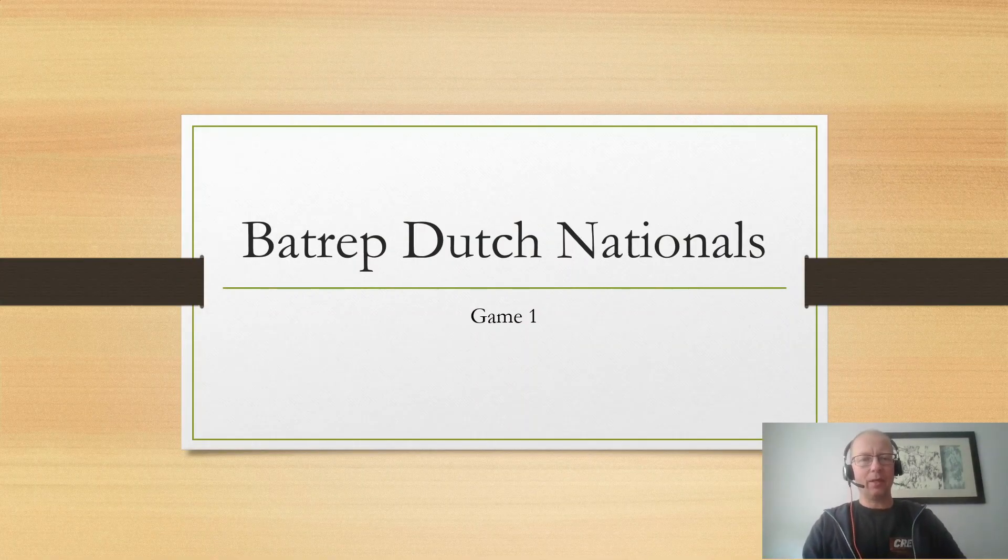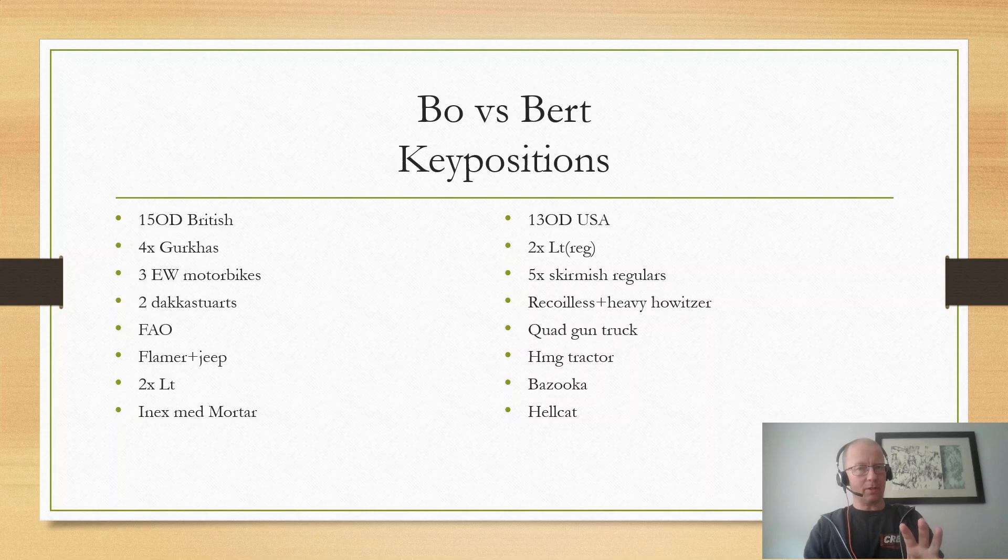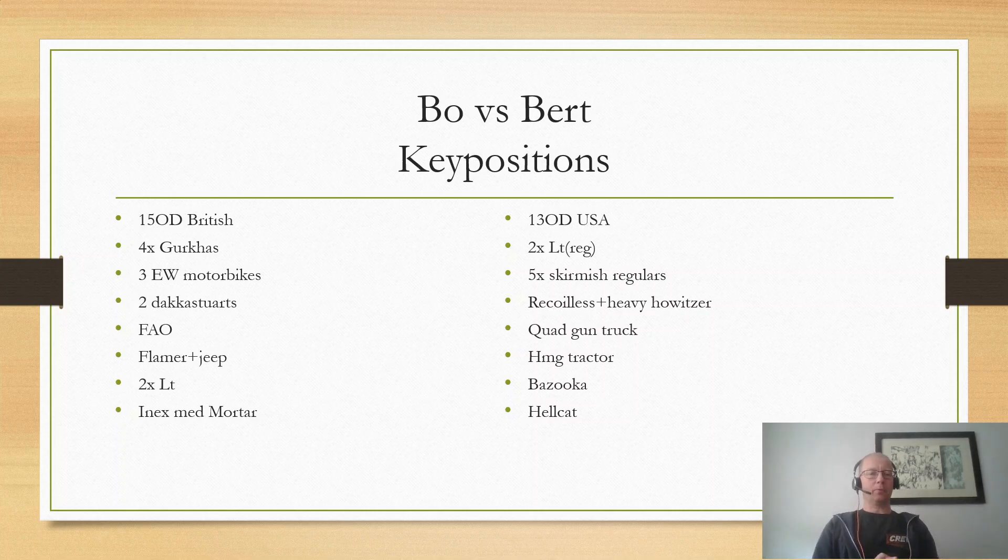We were playing key positions, and I had brought my completely overpowered assault bridge. Four Gurkhas, three early war motorcycles, two Daimler Dingos, forward artillery observer, flamer jeep, two lieutenants, and an inexperienced medium mortar.